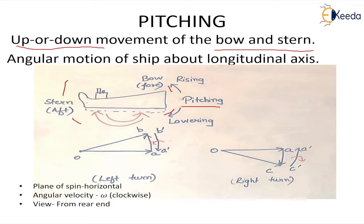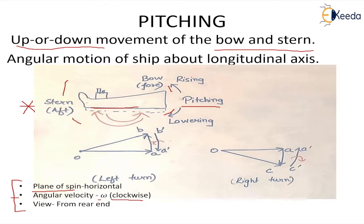To understand how the effect of pitching works with the help of gyroscopic couple, we have taken a case. We are considering that the plane of spin of all the rotating parts or the rotor is horizontal, and the angular velocity of rotation is omega which is in the clockwise direction, and the viewer is at the stern or rear end observing the motion of the ship. Because the plane of spin is horizontal and rotation is clockwise, when we apply the right hand screw rule, the thumb points in this direction, so we plot a vector OA giving the initial position of the angular velocity.